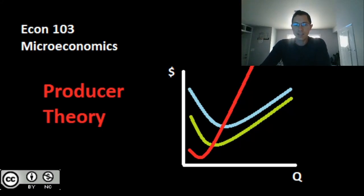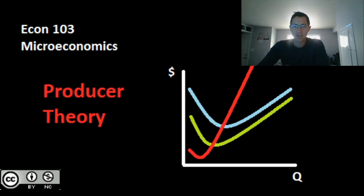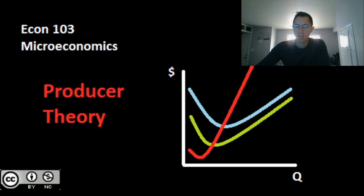We've seen how firms react in the short run — their short run cost curves and the idea that firms exist to maximize profit. In this video, we're going to carry on with producer theory, discussing our cost curves, but switching our focus from the short run into the long run. The big determinant distinguishing these two is whether or not we have a fixed factor of production.